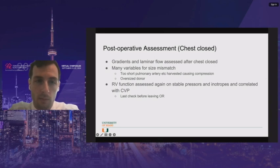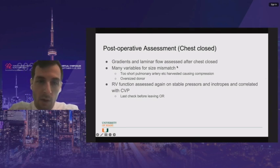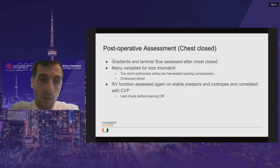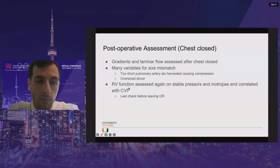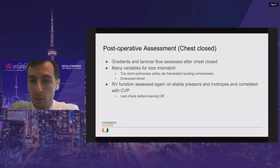The full post-operative assessment should be repeated after chest closure. The donor tissue can be too short for that particular patient for various reasons — the donor can be too big or too small, there can be packing in the chest, or the chest was tight to close. All measurements should be redone once the chest is closed before leaving the OR. Hemodynamics can change with chest closure, so confirm that CVP has stayed stable, pressors aren't increasing, and inotropes don't need to be increased before going to the ICU.